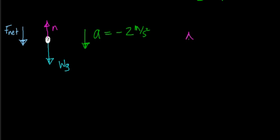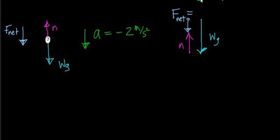Using the tip-to-tail method, we have the normal force vector in the upward direction, and we place the tip of the weight force vector on the tail of the normal force vector. Drawing the net force vector — the difference between these two vectors — gives us the net force acting on this person, slowing them down. By Newton's second law, the net force has a magnitude equal to the mass of the object times the acceleration of the object — that is how fast you're changing this object's velocity. We'll use Newton's second law again to figure out the magnitude of the weight force as the elevator slows down.